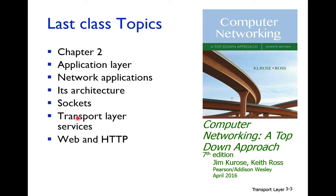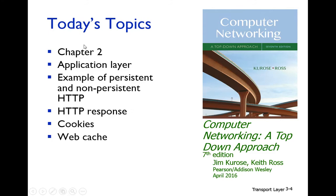We also discussed what transport layer services are available on the current internet, then started web and HTTP protocol — how to access a website using HTTP, which is an application layer protocol used for web access. We discussed how application layer protocols are designed, how they interact, and how syntax and semantics are specified. Today we continue chapter two.